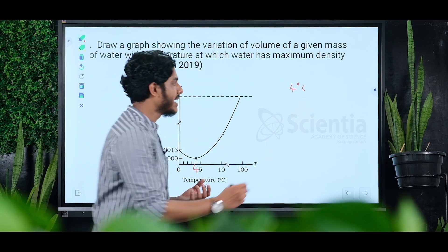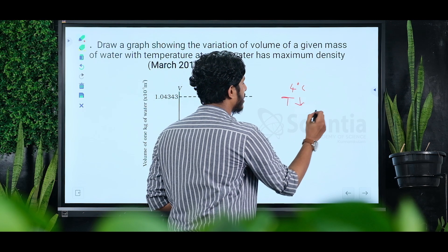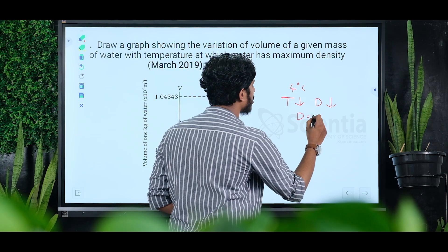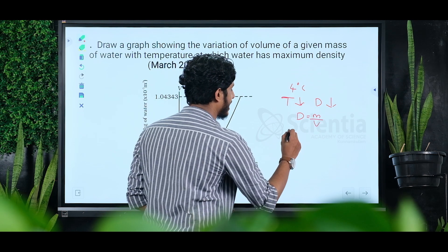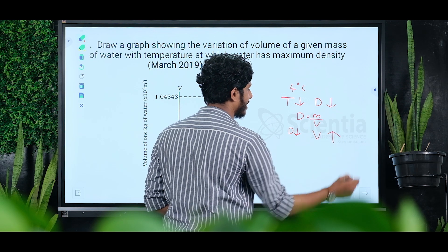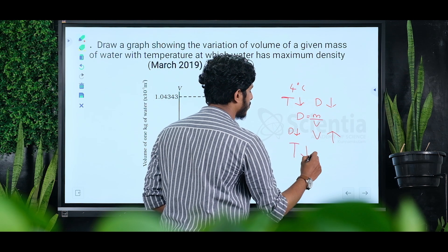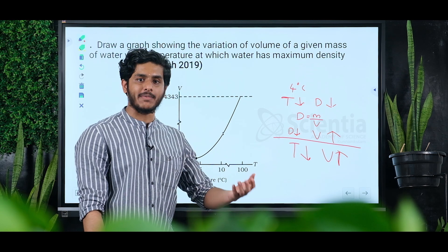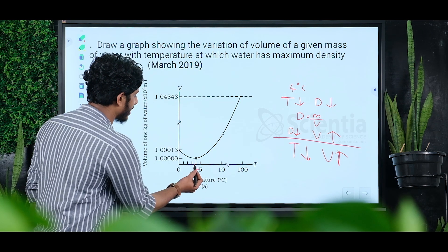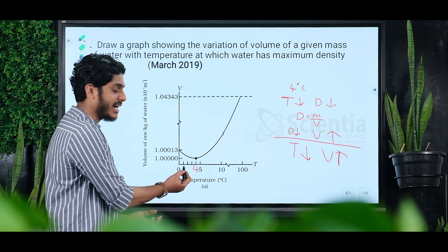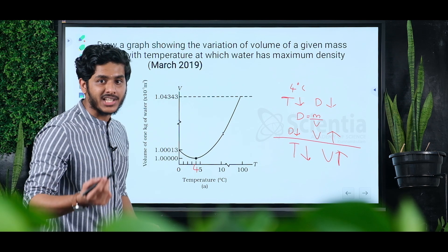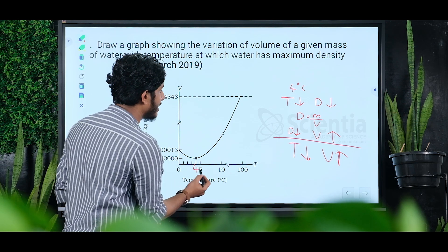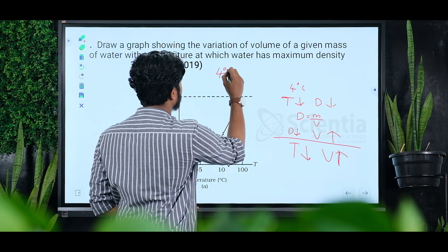From 4 degrees to 0 degrees Celsius, as temperature decreases, density also decreases. Since density equals mass by volume, as density decreases, volume increases. This expansion is called anomalous expansion of water. At 4 degrees Celsius, water has maximum density.